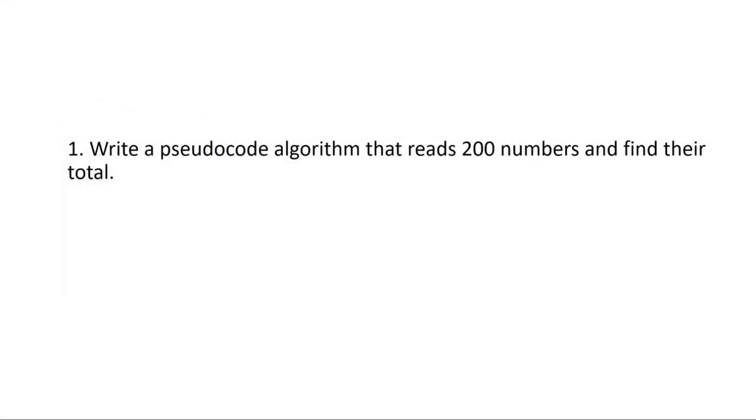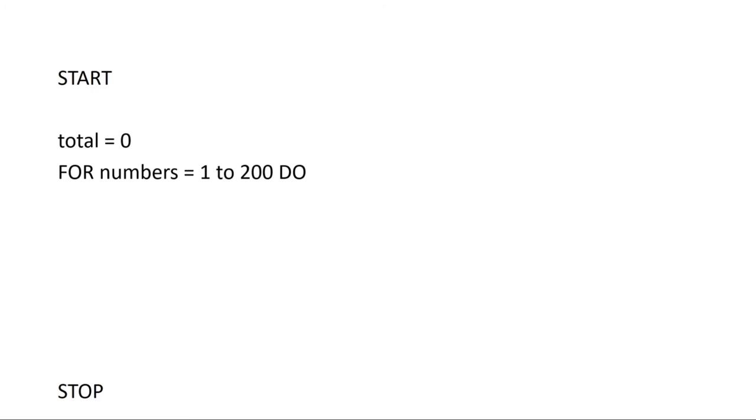Now we're going to look at some for loop questions. This question requires us to write a pseudocode algorithm that reads 200 numbers and finds their total. The first thing we'll need to do is initialize the cumulative total variable, because we'll be using it to store the total for the 200 numbers. It would be impractical to initialize 200 separate variables — number one, number two, number three, and so on — so we use cumulative total to find the total of all 200 numbers.